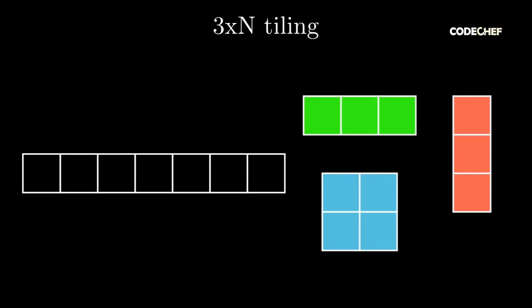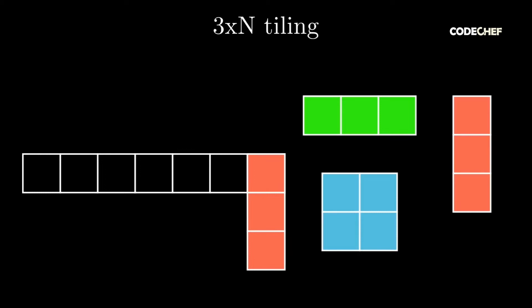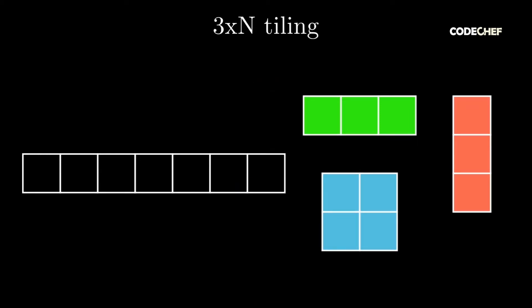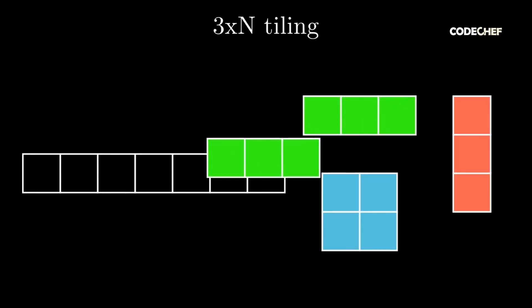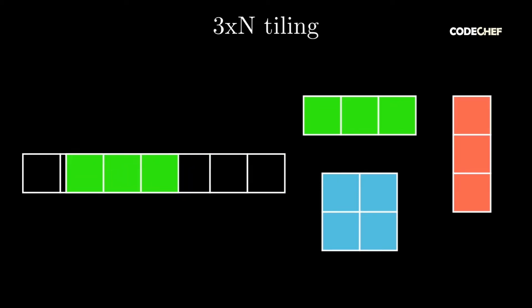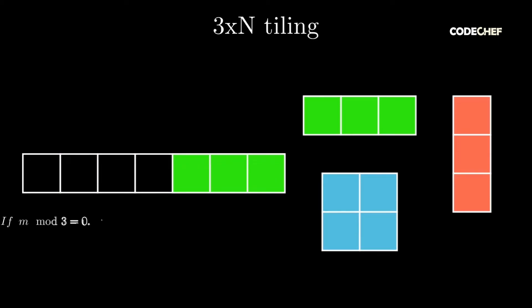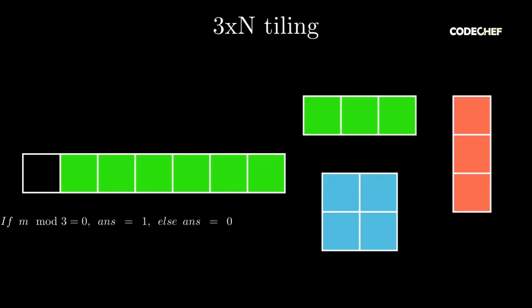Let's try and figure out what happens if n is equal to 1. If we try placing a 3 times 1 tile, it won't fit as it has 3 rows and our grid has just 1 row. Similarly, if we try placing a 2 times 2 tile, it won't fit as it has 2 rows and our grid has just 1 row. We can see that a 1 times 3 tile fits in the grid perfectly, occupying 3 consecutive columns in the only row. We can only fill up the grid in one way if m is a multiple of 3. Otherwise, there'll always be at least one unoccupied column. For example, if m is equal to 7 which isn't a multiple of 3, we can't fill this grid. However, if m is equal to 6, it could be filled up completely.